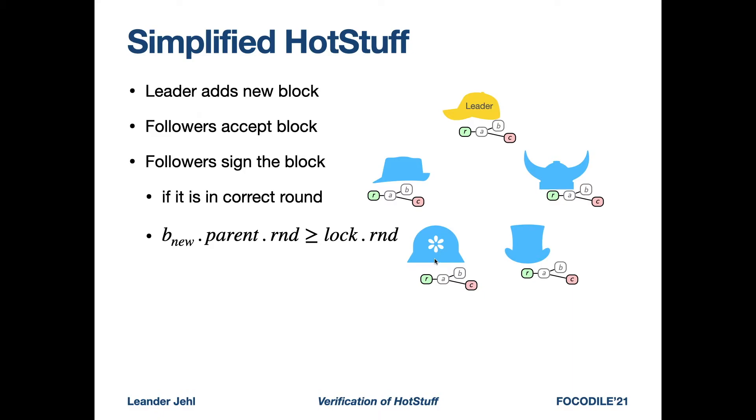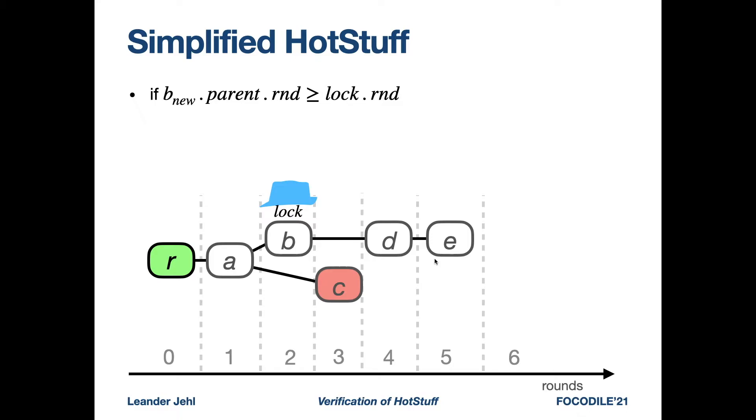Additionally, there is this second rule here, which says to only sign a new block if its parent has a round larger or equal to the round a process has locked.